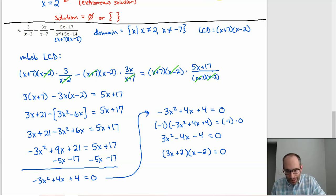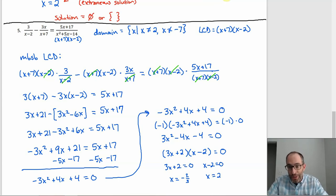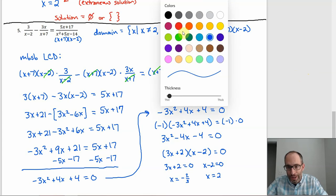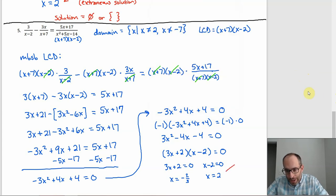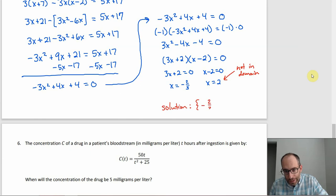Using the zero product property: 3x + 2 = 0 gives x = −2/3, and x − 2 = 0 gives x = 2. However, x = 2 is outside the domain, so we have to throw that out — it's an extraneous solution. The −2/3 is fine; the only values to throw out would be 2 and −7. So the solution is the set {−2/3}.